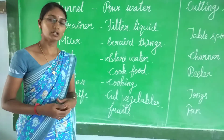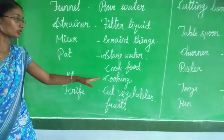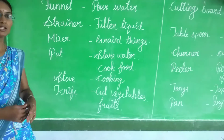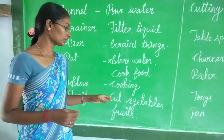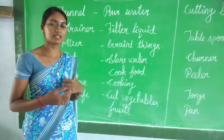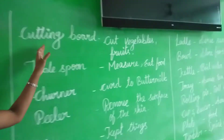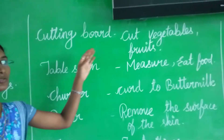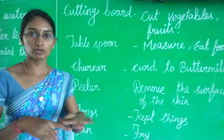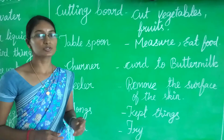It is used to cut vegetables and fruits. Vegetables and fruits are cut. It is used to cut our fruits. Next one is stout. Next one is cutting board. It is used to cut vegetables and fruits. Cutting board - vegetables and fruits are cut.